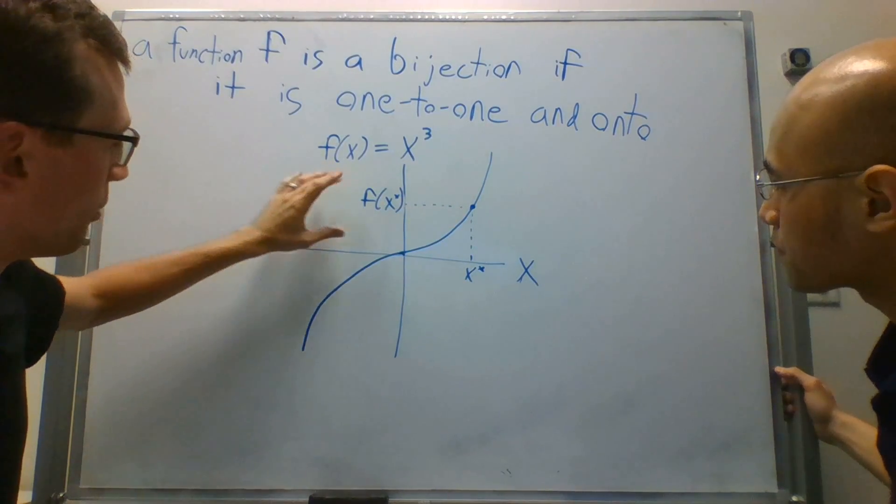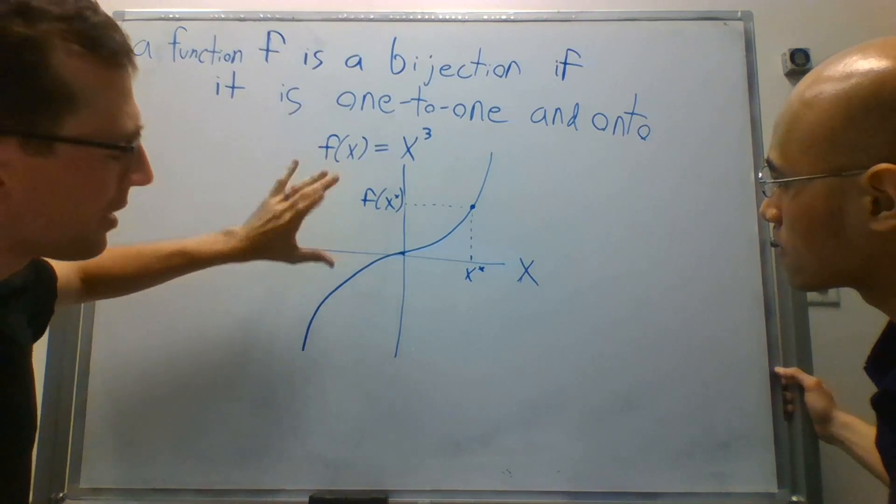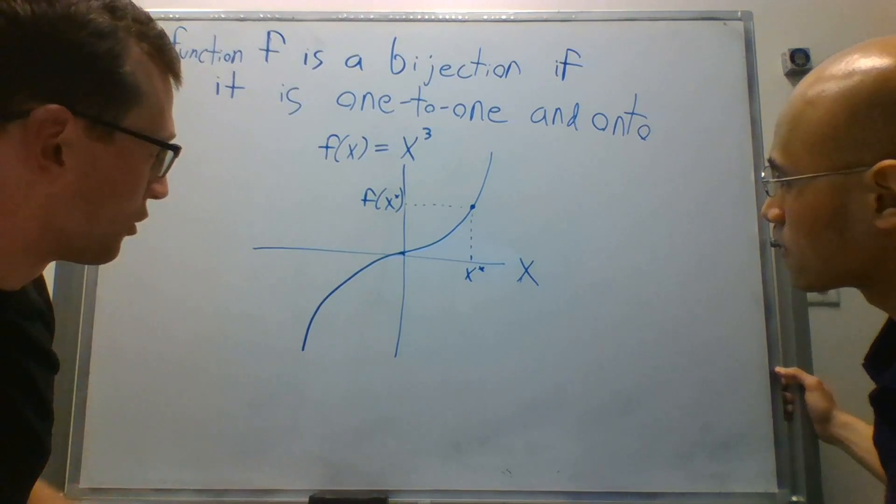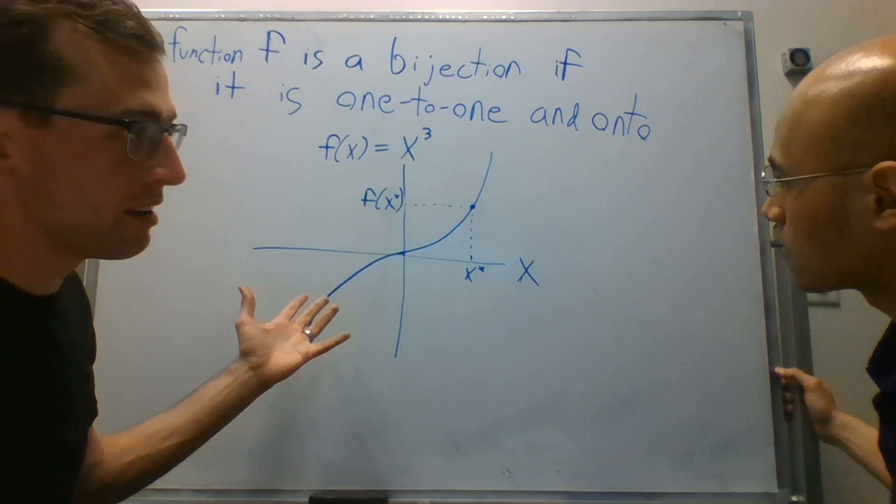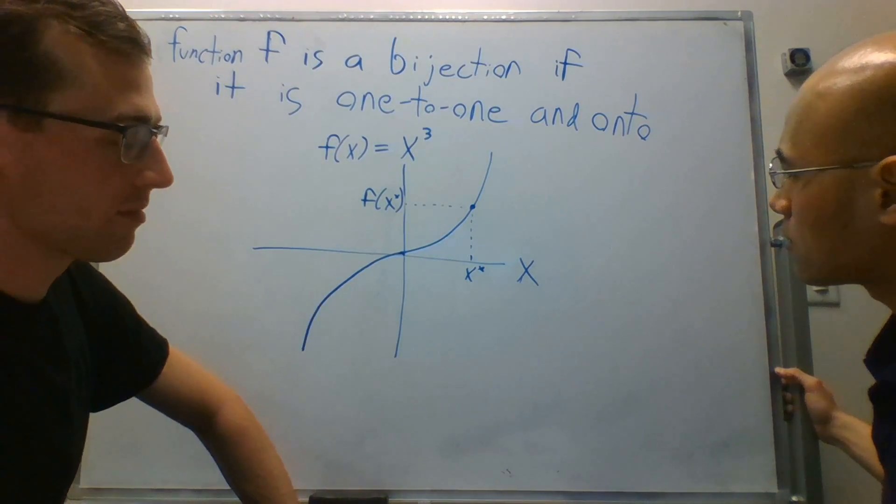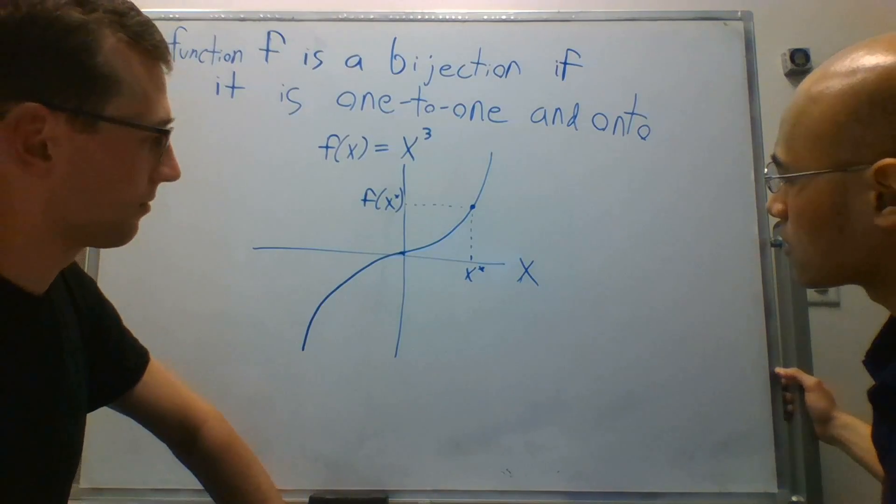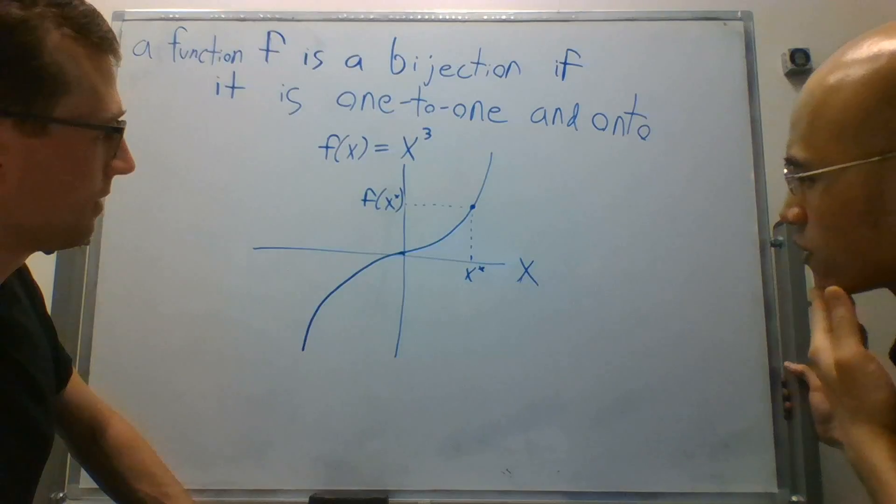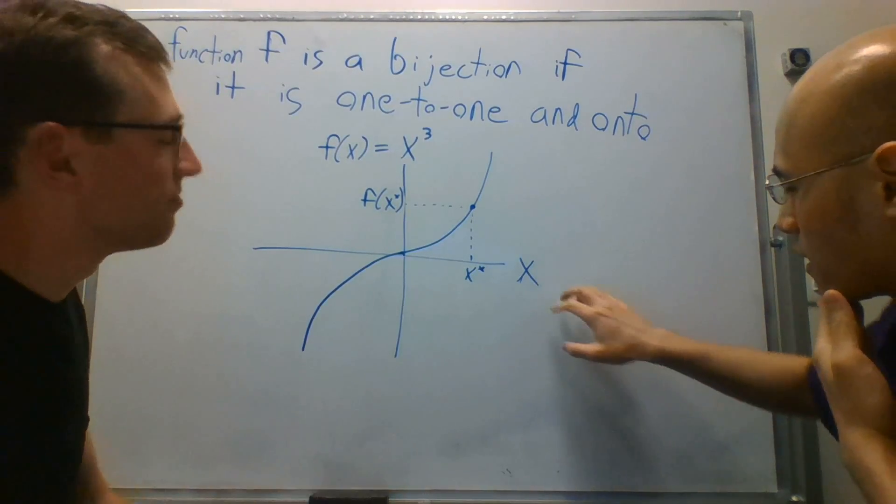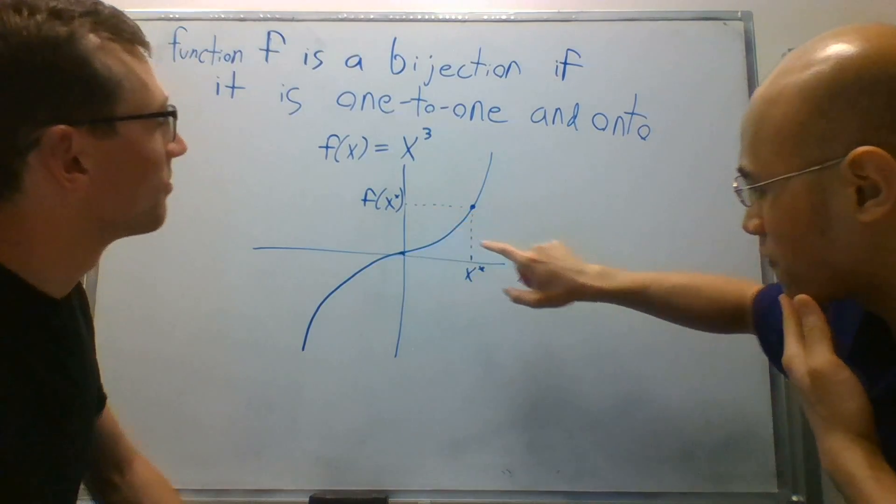So if you've been given f of x star, or sorry, if you've been given f of, let's say, a, for example, and it's equal to f of x star. Well, what can you tell about a? There is no other value in x that can map to f of x star.